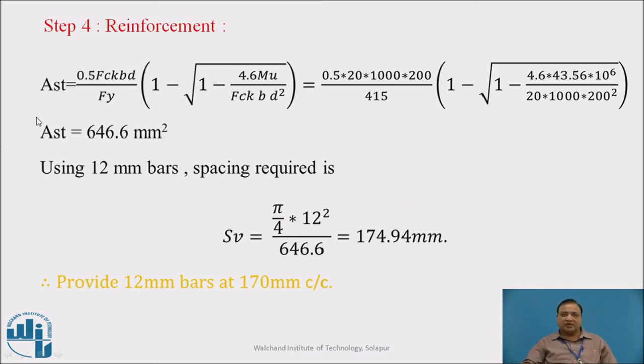Step 4: Reinforcement. AST is calculated using the relation 0.5 fck BD divided by fy into 1 minus square root of 1 minus 4.6 MU upon fck BD square. By substituting the values, we get AST as 646.6 mm square. Using 12mm bar, spacing required is area of 1 bar times 1000 divided by 646.6, which is 174.94mm. Therefore provide 12mm bars at 170mm center to center.